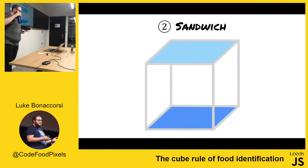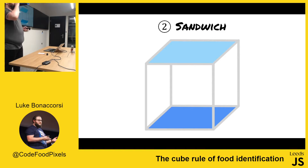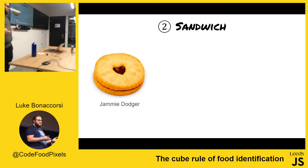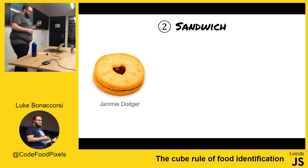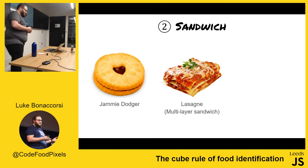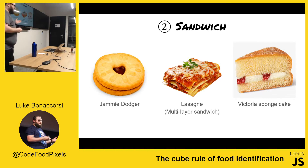Next up, we have sandwiches, which means that the item is surrounded on two sides. So examples of sandwiches are jammy dodgers, lasagna — which is a multi-layer sandwich — and Victoria sponge cake.